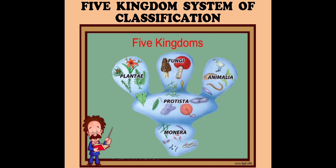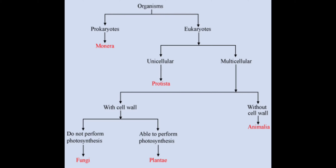Now, if we look at this particular chart about the classification of animals, we understand that all living organisms are basically classified under two major types: prokaryotes and eukaryotes, or prokaryotic organisms and eukaryotic organisms.